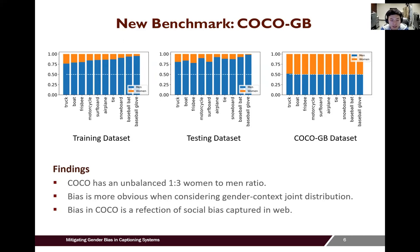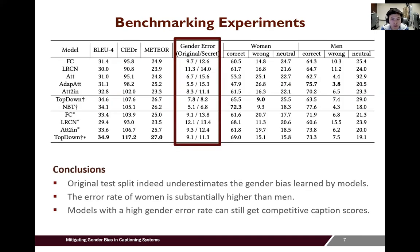To construct an unbiased test dataset, we utilize a greedy algorithm to select a test dataset from the original test split, so that each object category has a nearly equal co-occurrence probability with women and men. Equipped with our new benchmark datasets, we evaluate several widely used captioning models. Gender error measures the error rate when describing women and men. The results prove that the original test split indeed underestimates the gender bias exhibited by the models, and the gender error on the CocoGB test dataset is much higher than on the original test dataset.